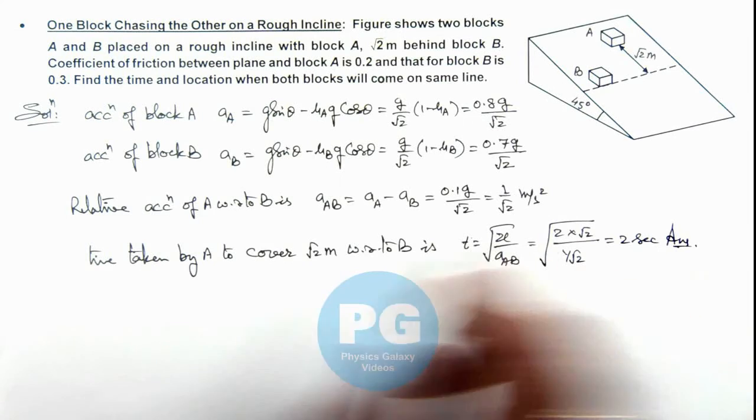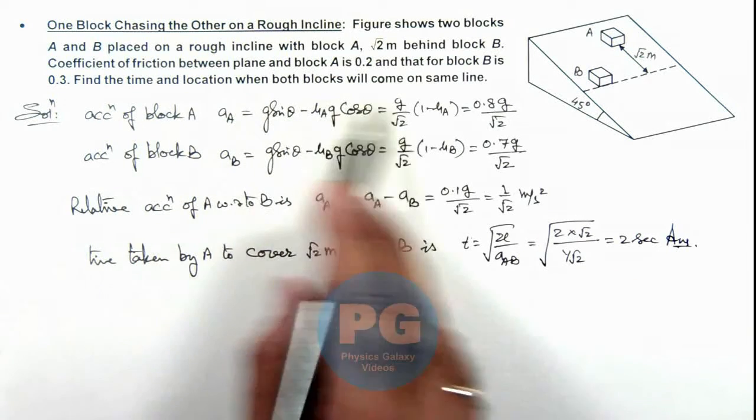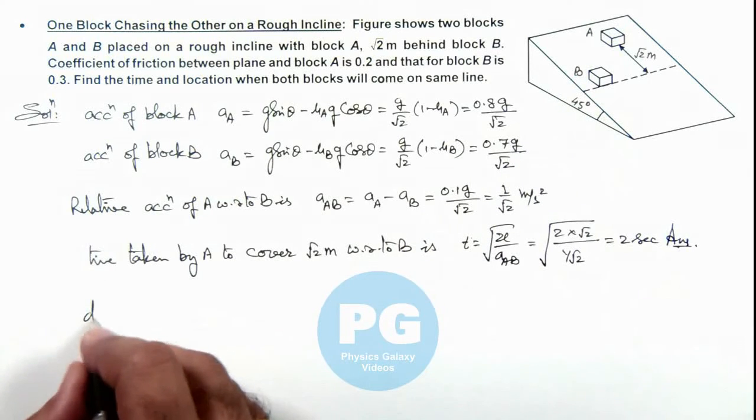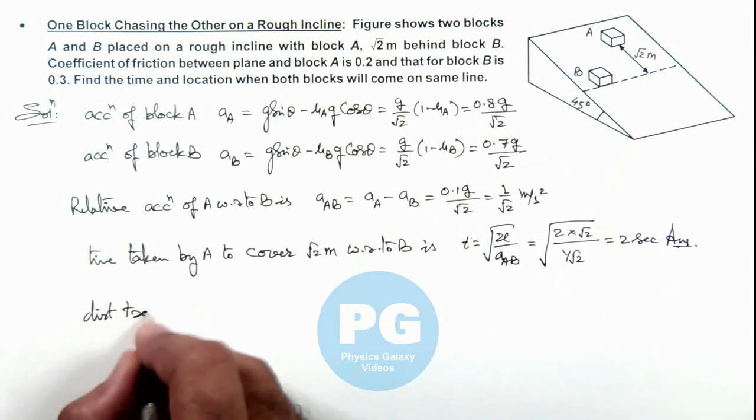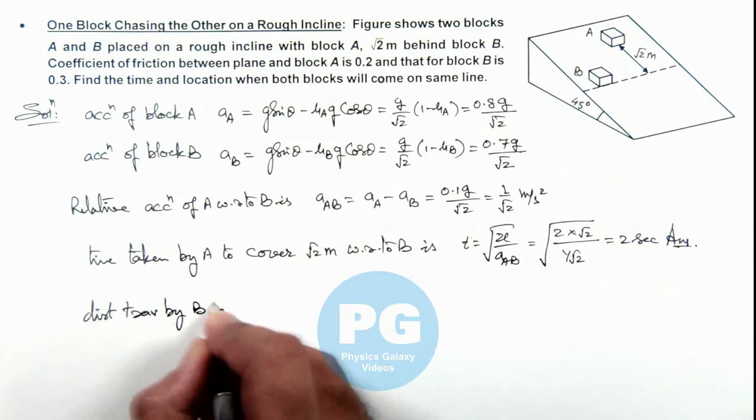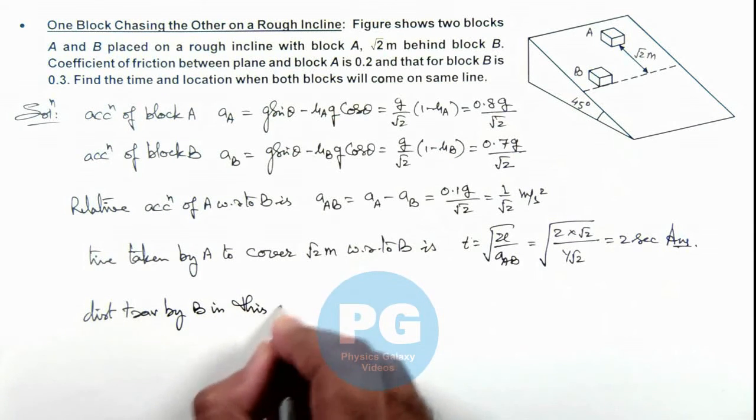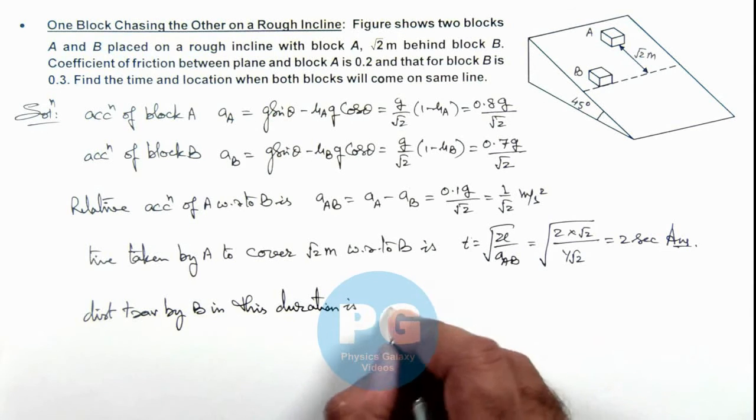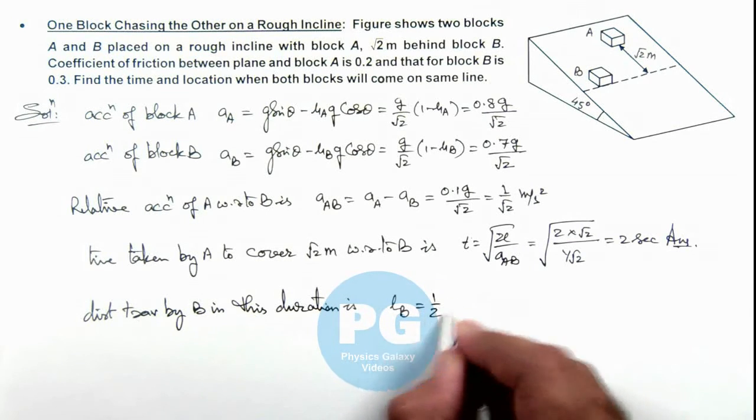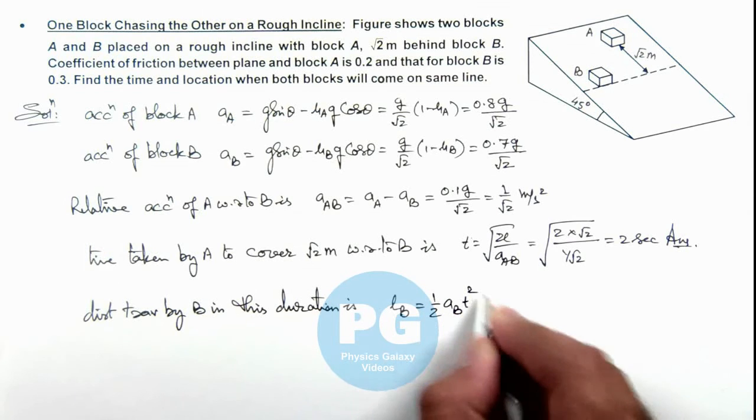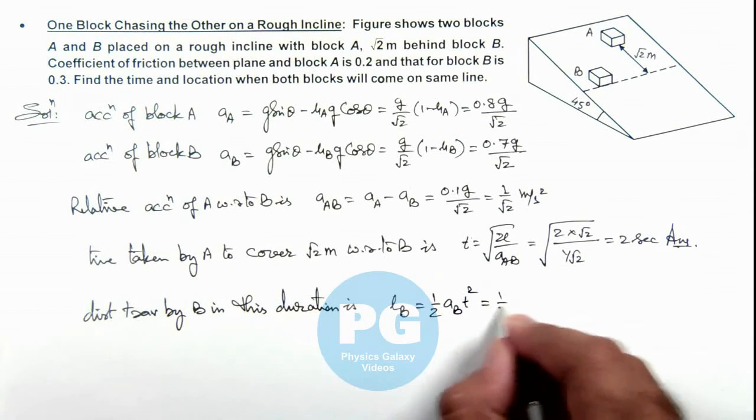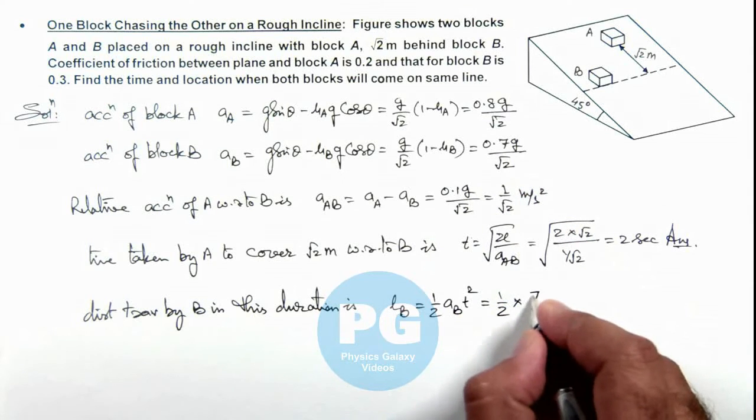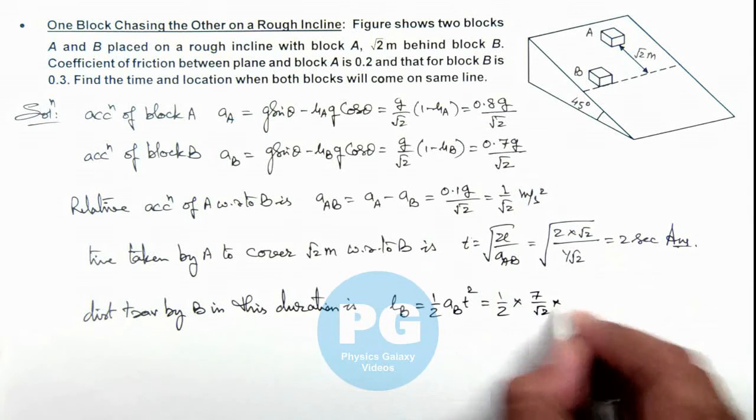And we are also required to find the location where both blocks will come on the same line. So we can calculate the distance travelled by B in this time. This can be written as distance travelled by B is ½ acceleration of B multiplied by t². So this is ½ multiplied by 0.7 g/√2, so that will be 7/√2 multiplied by 2².